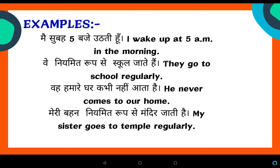Now let's look at some examples to see how translation works. The rule is: Subject + Verb first form + S/ES + Object. For example: the sentence 'मैं सुबह 5 बजे उठती हूँ' — the rule here is Subject + V1 + S/ES + Object.